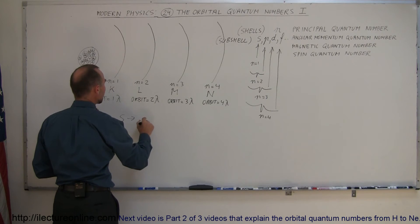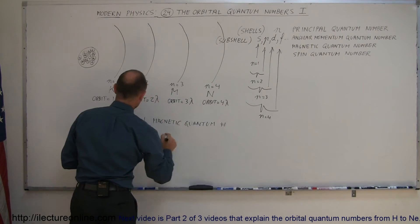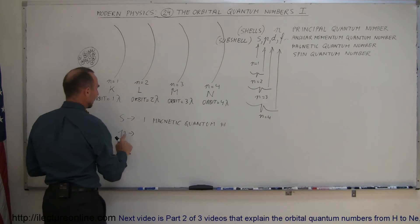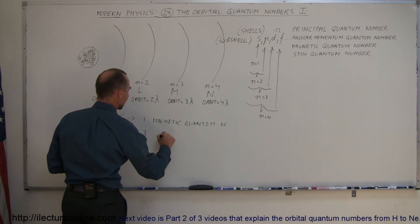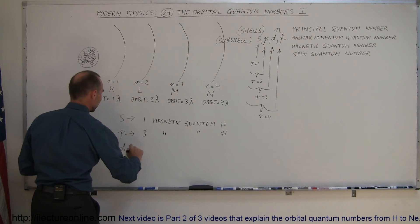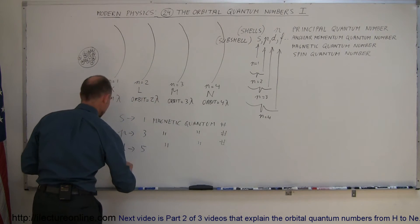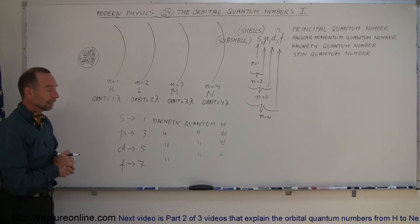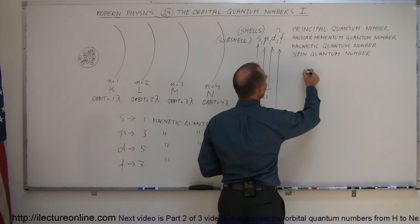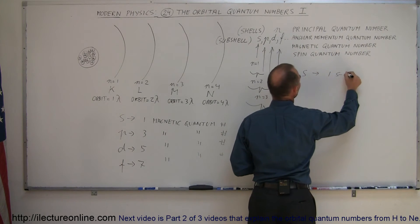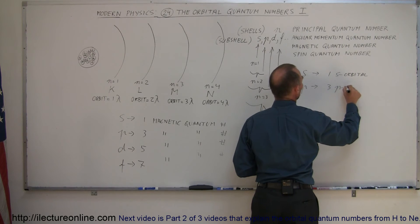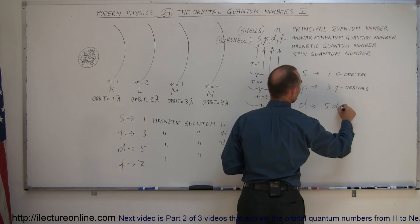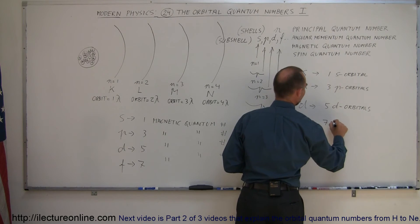The subshells are associated with the S, P, D, F designations. In the S subshell, there can only be one magnetic quantum number, meaning there is only one S orbital. In the P subshell, there can be different orbit shapes, so there are three magnetic quantum numbers and three P orbitals. In the D subshell, there are five magnetic quantum numbers and five D orbitals. In the F subshell, there are seven magnetic quantum numbers and seven F orbitals.